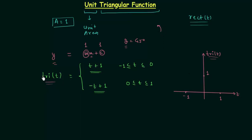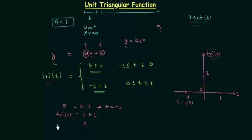The equation of the first straight line is tri(t) equal to t plus 1. When tri(t) is equal to 0, t is equal to minus 1, so we have one point with coordinates (minus 1, 0). When t is equal to 0, tri(t) is equal to 1, giving us another point with coordinates (0, 1). Now we join these two points to get the straight line tri(t) equal to t plus 1.